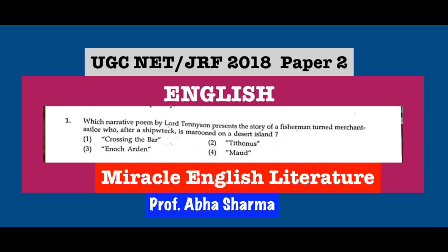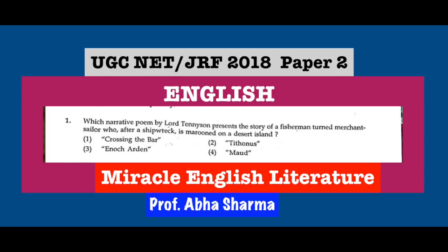Question number 1: Which narrative poem by Lord Tennyson presents the story of a fisherman turned merchant sailor who, after a shipwreck, is marooned on a desert island? You must have read many poems by Lord Tennyson. He was the poet laureate when he wrote this particular poem. The correct answer is Enoch Arden, written in 1864, and it resembles somewhat Robinson Crusoe.